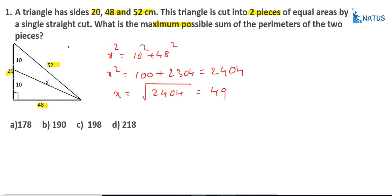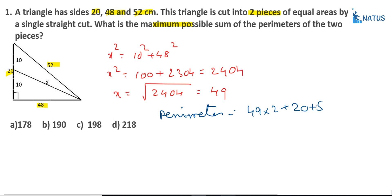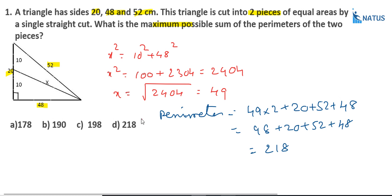We require the maximum possible sum of the perimeters. The sum of the two triangles' sides: x is common, so the perimeter equals 49 × 2 plus 20 plus 52 plus 48. That is 98 + 20 + 52 + 48 = 218. Option D is the correct answer.